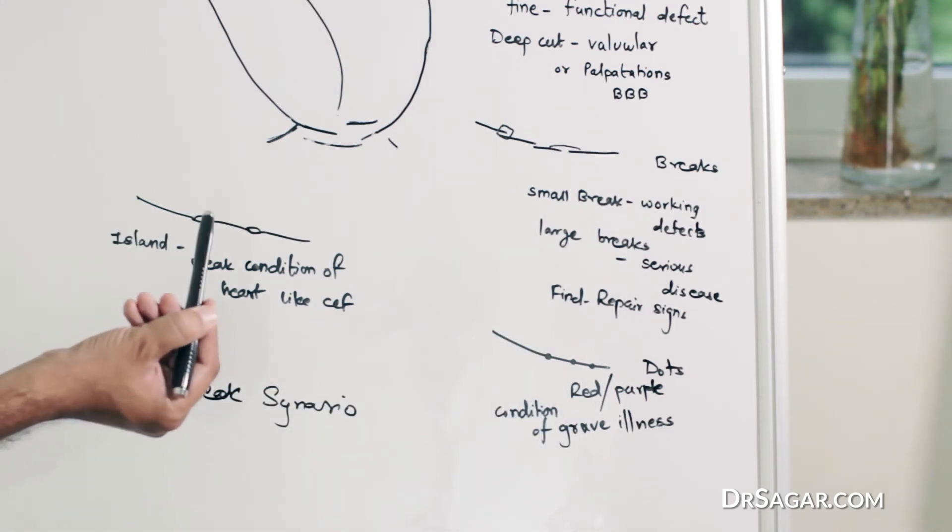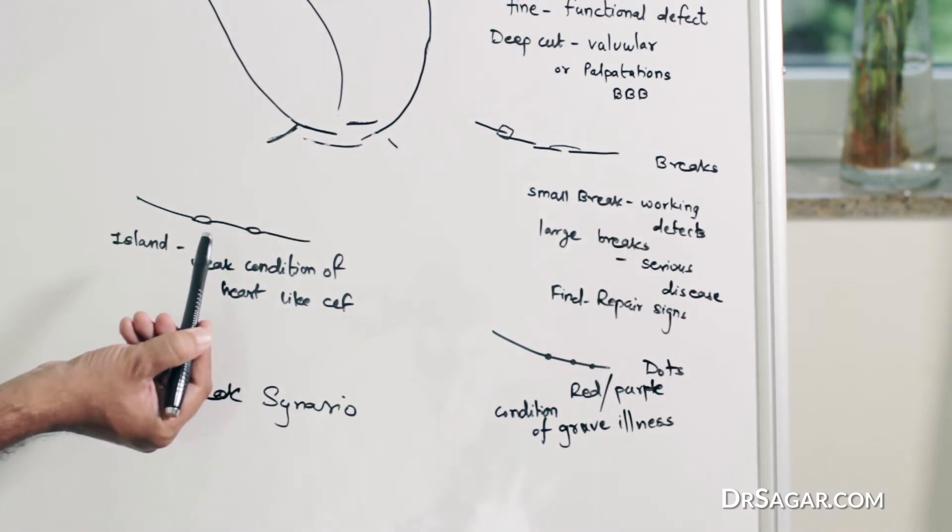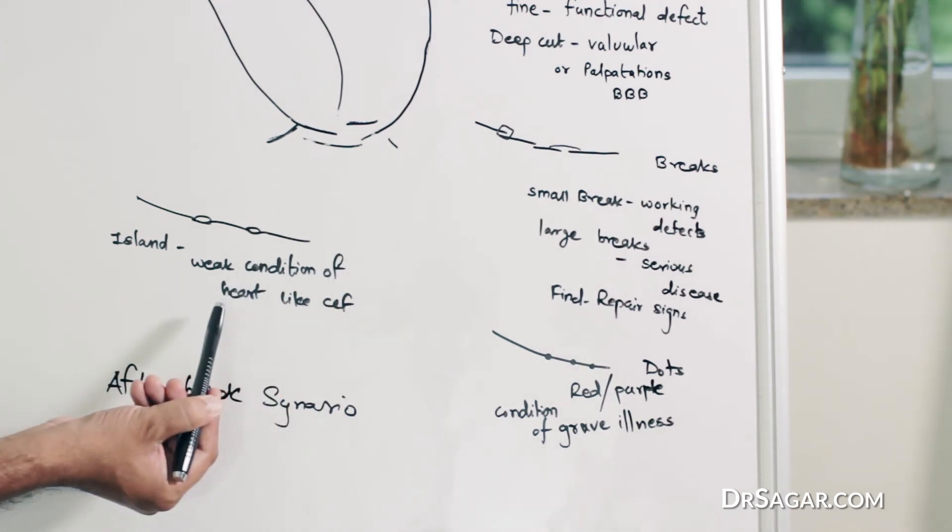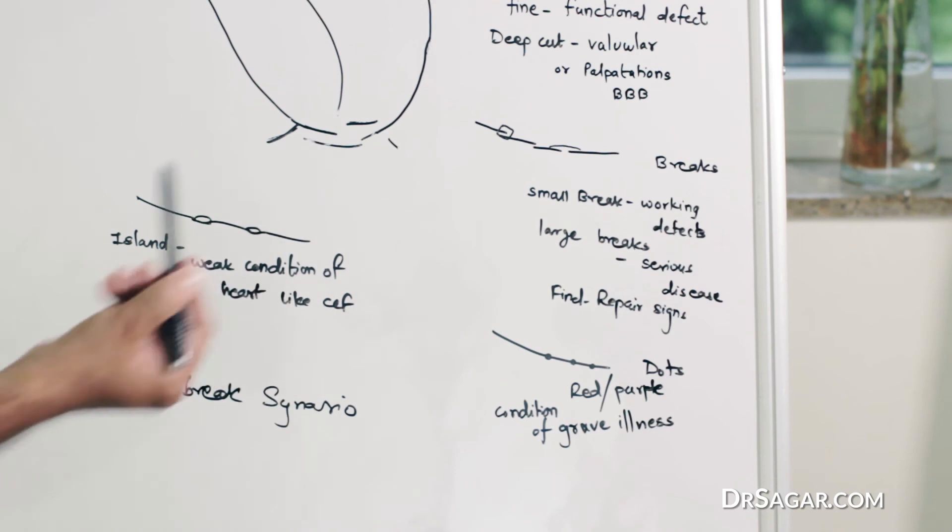Island, like this, if it is present on the heart line, it indicates weak condition of the heart, like in CCF, congestive cardiac failure.